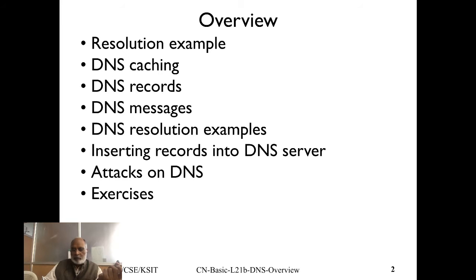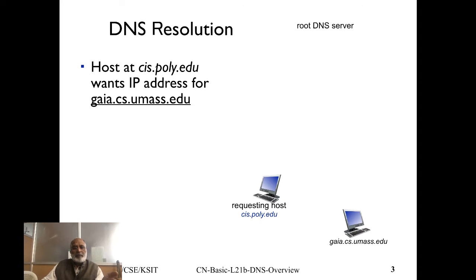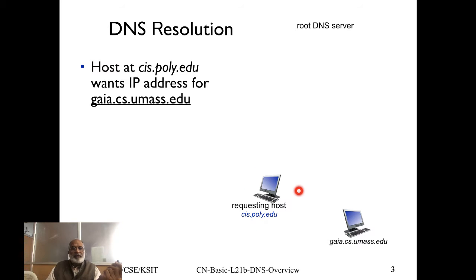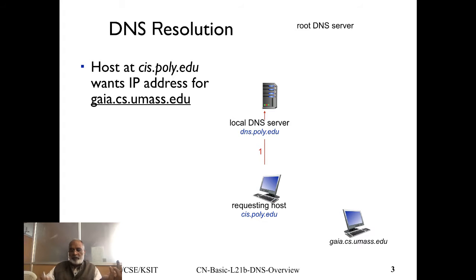These slides are primarily from the textbook Computer Networking by Kurose and Ross. Let's say the requesting machine cis.poly.edu wants to get the IP address for gaia.cs.umass.edu. The requesting host sends a DNS request to the local DNS server. If the local DNS server has the information it will give a response back, but assuming it does not have the IP address for gaia.cs.umass.edu, it will send a request to the root DNS server.